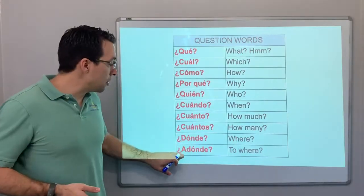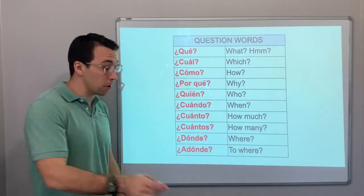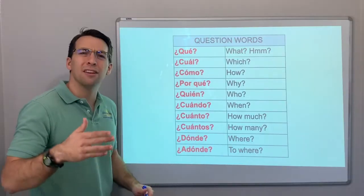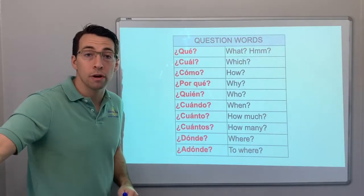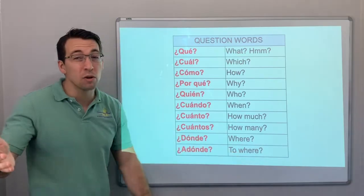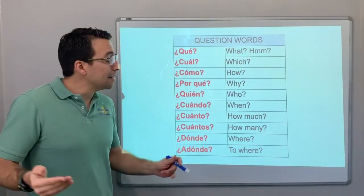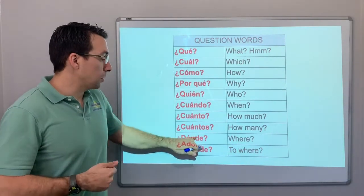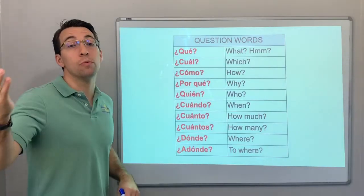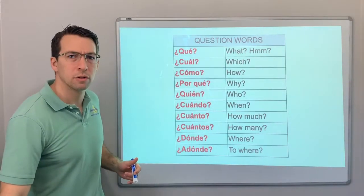¿Dónde? And then, ¿a dónde? This is cool — ¿dónde? is 'where,' and ¿a dónde? is 'to where.' For example, ¿a dónde vas? — to where are you going? In English we don't really say 'to where are you going' commonly, but it's correct. ¿A dónde vas? — where are you going to?